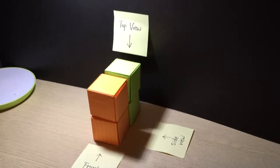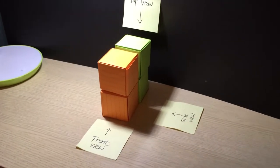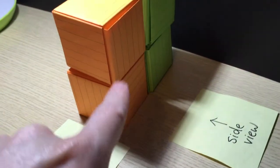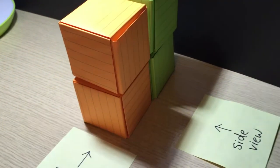So actually we can repeat this top view, front view and side view with another three-dimensional object. For example, this three-dimensional object consists of four cubes.